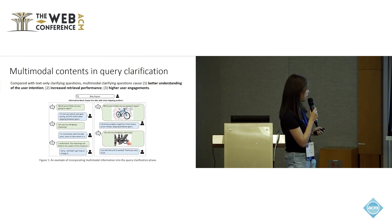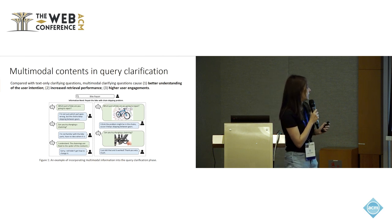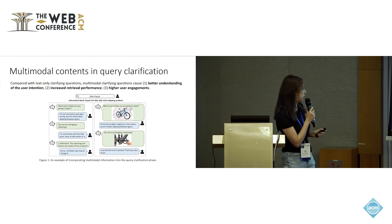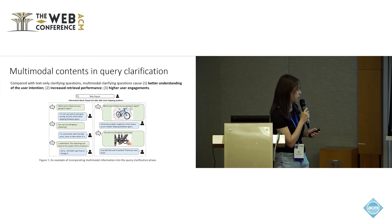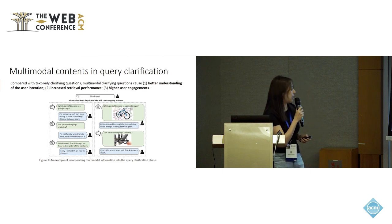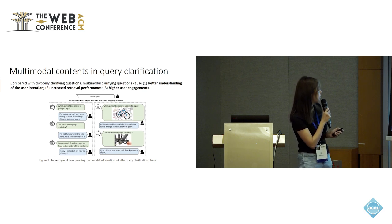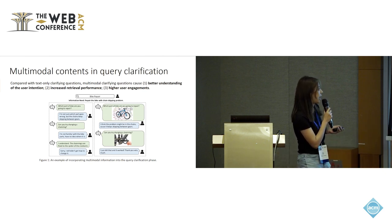Let's first take a look at this picture, which shows two conversations — one with images and one without. When a user submits a query 'bike repair' to the system with a hidden information need — repair the bike with a chain-escaping problem — we can see that if we add some images to the clarifying question, it will produce visual representations of the intended query, allowing the user to see what he or she is actually searching for. Compared with text-only clarifying questions, multimodal clarifying questions foster better understanding of user intention, increased retrieval performance, and higher user engagement.